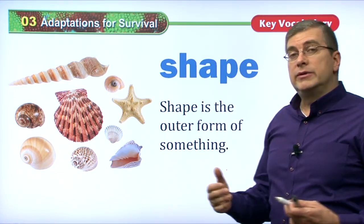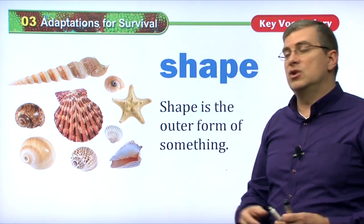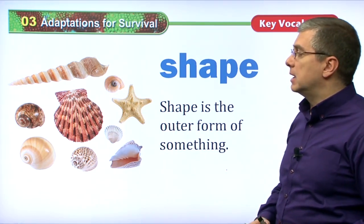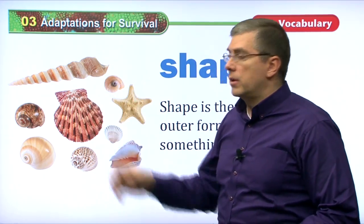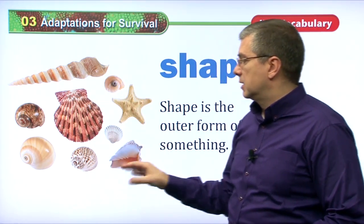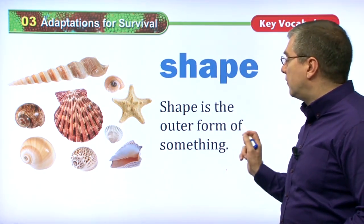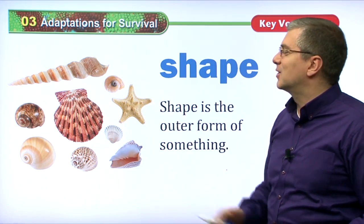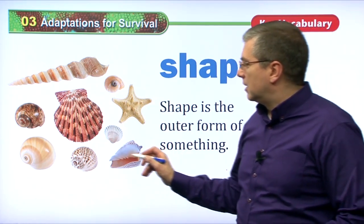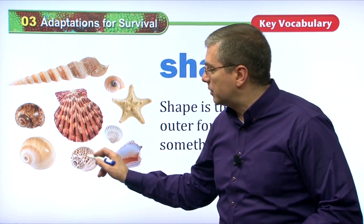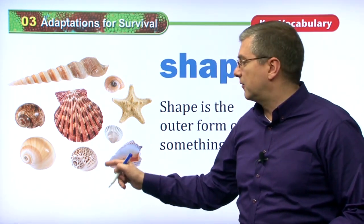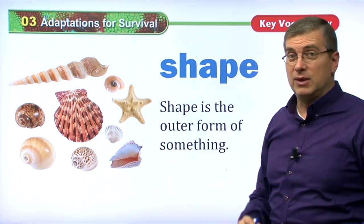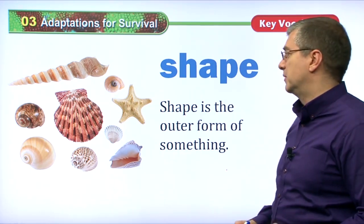Now we have shape. When animals adapt to their wild surroundings, they will have different shapes. We can see a lot of different shapes even if we just look at shells. Some animals in the ocean will use shells for their body to protect them, and they have lots of different shapes according to what their needs are. Shape is the outer form of something. We have a starfish that looks like a star shape, circular cone shells where hermit crabs or snails will live. There are lots of different shapes for different types of animals that live in the ocean.